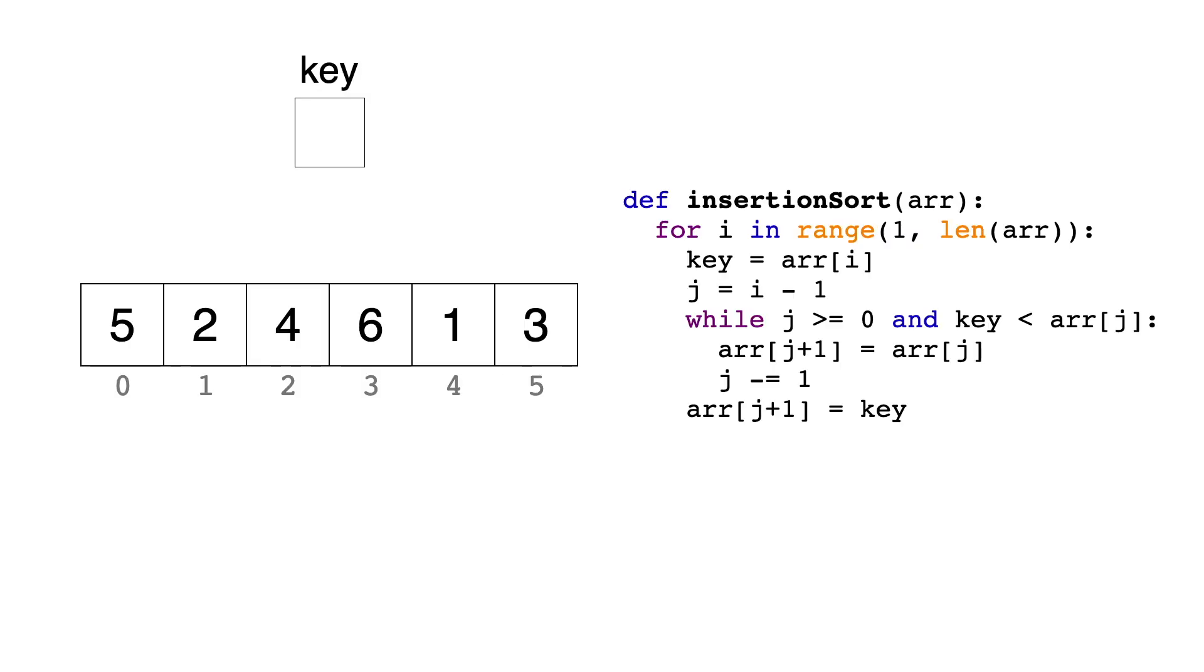So on the right is a very common implementation of insertion sort. We start by entering a loop that starts at index i equals 1. This will be the loop that keeps track of the current item and will iterate for each item in the array. The next line explicitly takes the value of the current item and names it key.